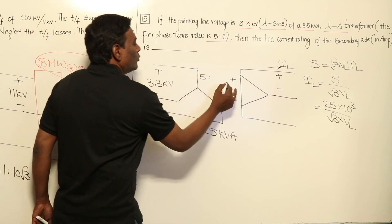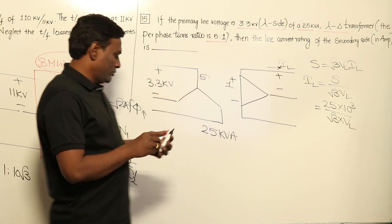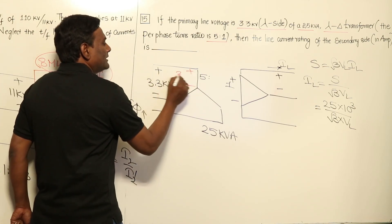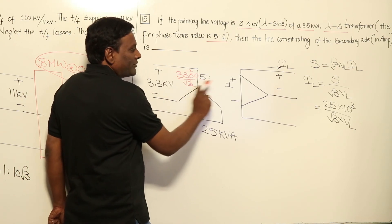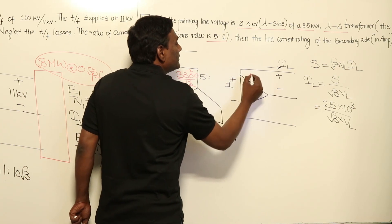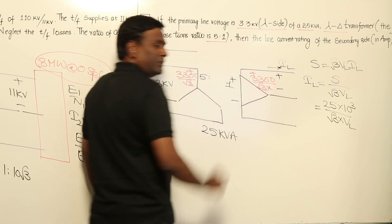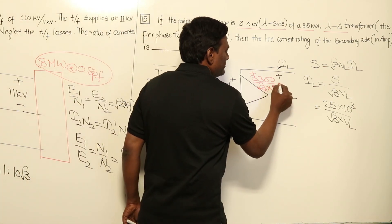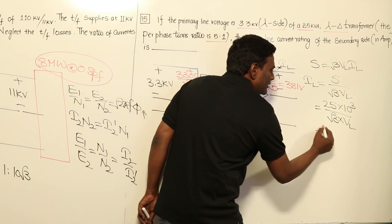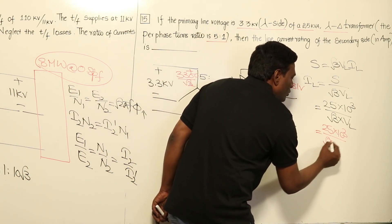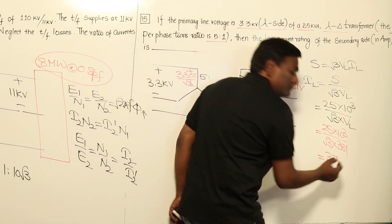Since the turns ratio is 5:1 and in three-phase transformers the phases are magnetically coupled, the primary per-phase voltage is 3300 / √3 volts. Applying the turns ratio (HV:LV = 5:1), the secondary phase voltage is (3300 / √3) / 5 = 381 volts. In delta connection, line voltage equals phase voltage, so VL = 381 V. Therefore, IL = 25,000 / (√3 × 381) ≈ 37.88 amperes.